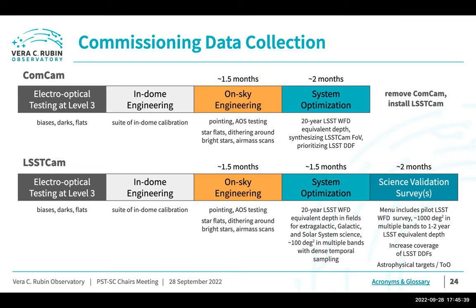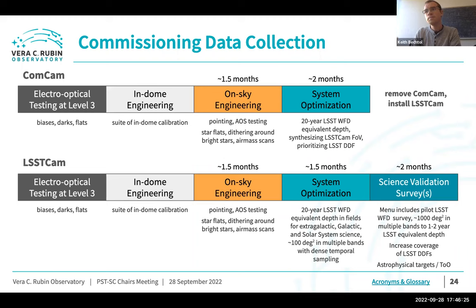Leanne adds an important point about DP1: throughout commissioning with ComCam, data is processed every night, possibly with different versions of the science pipelines as bugs are found and fixed. When we reach the end of that period, we stop, take all that data, produce a release of the science pipelines including all fixes, then reprocess everything with one fixed version — and it's that reprocessed version that becomes DP1. Likewise for DP2.